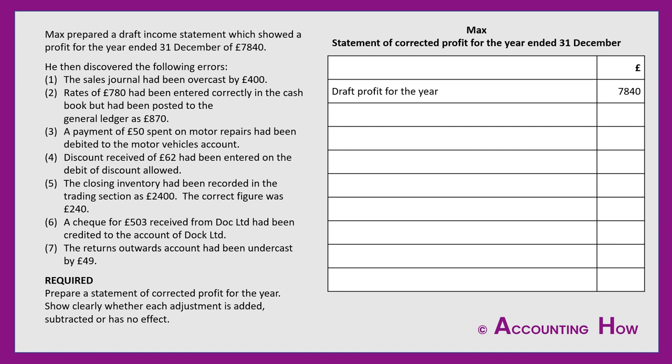The underlying key is that profit is calculated in the income statement. When considering these errors, we need to think: does the error affect something in the income statement? If yes, then correcting the error will change the profit. But if the error only affects things found in the statement of financial position, also known as the balance sheet, then it won't have any effect on the profit.